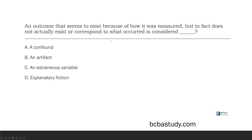An outcome that seems to exist because of how it was measured, but in fact does not actually exist or correspond to what occurs — consider what? This is a definition question. What we're working on is making us aware of some of the more obscure terms people don't talk about often. Hopefully our measurement is dialed in and our fidelity is good, but if it's not and we see an outcome that appears to have happened but didn't actually happen — and the only reason it seemed like it did was because of how it was measured — what is that considered?